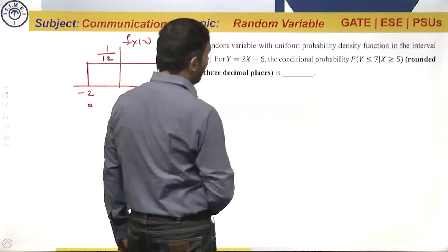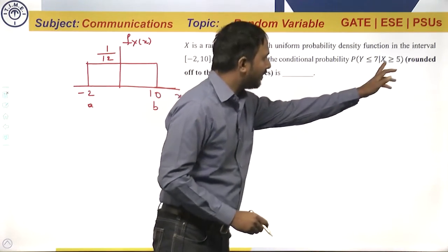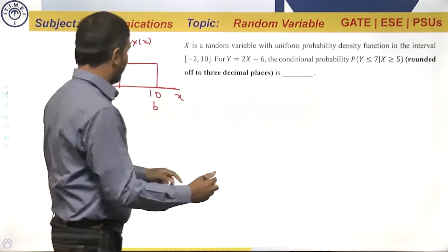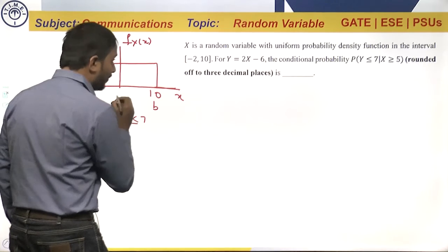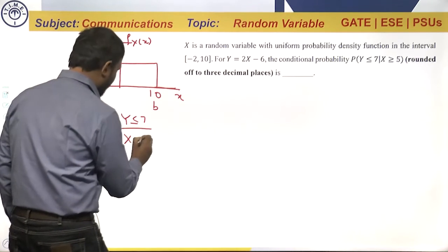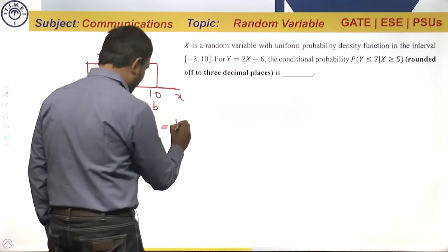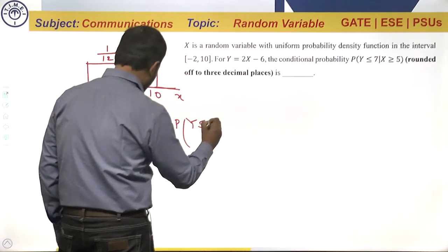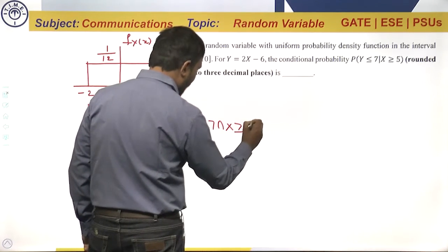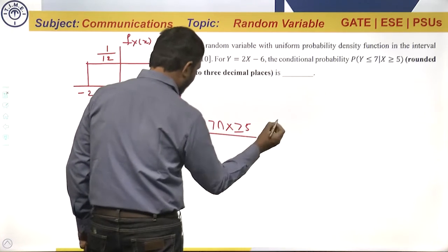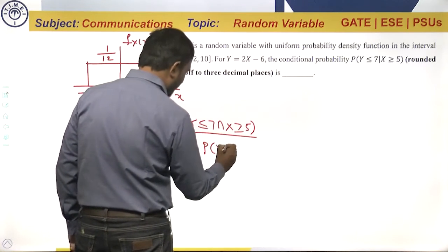For y equal to 2x minus 6, the conditional probability — probability of y less than or equal to 7 given x greater than or equal to 5. We can write this as probability of y less than or equal to 7 intersection x greater than or equal to 5, divided by probability of x greater than or equal to 5.